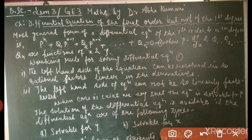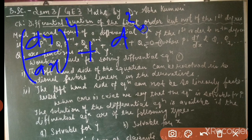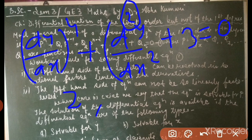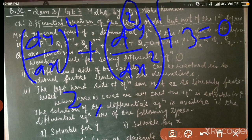The order and degree of a differential equation we have discussed in Class 12. So if we have an equation like (dy/dx)⁴ + d²y/dx² + 3 = 0, what is the order and degree of this differential equation? We see that the highest order derivative is the second derivative, so the order of the differential equation is 2.